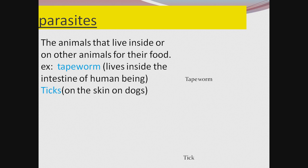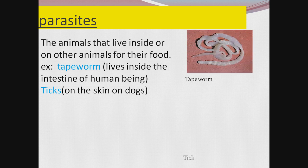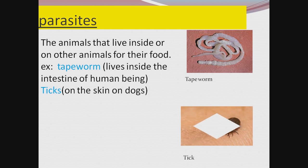Next is parasite. The animals that live inside, outside, or on other animals for their food are called as parasites. Examples are tapeworm, ticks, lice, and mosquito. These are animals which feed on living organisms. Tapeworm lives inside the intestine of a human being and takes all the digested food. Ticks live on the skin of dogs and animals and take their blood. Mosquito also depends on blood to live.